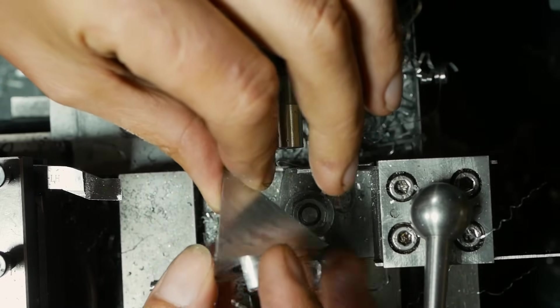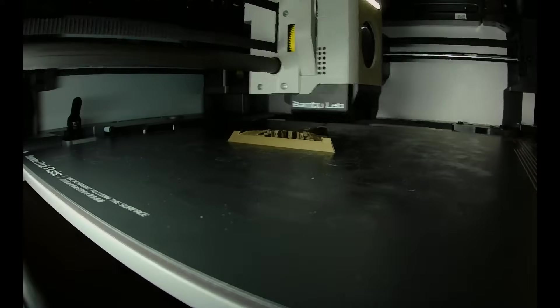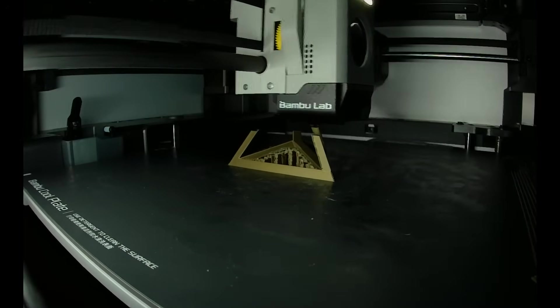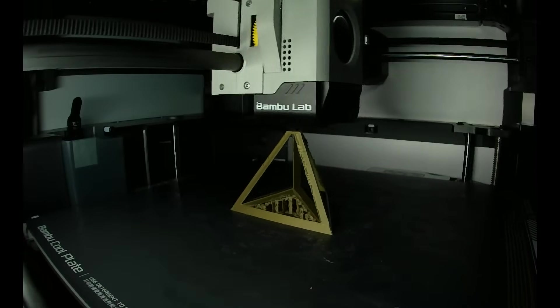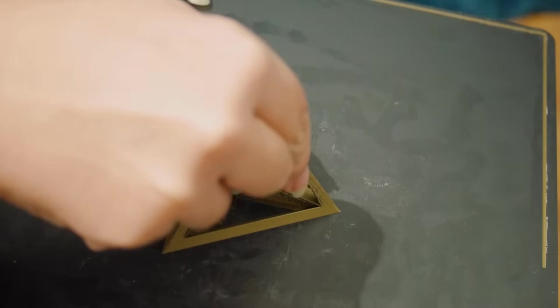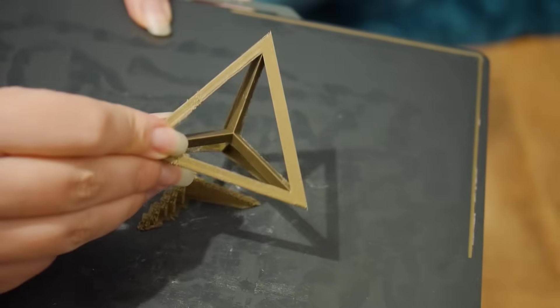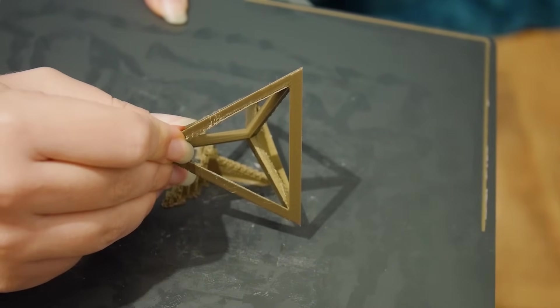I mentioned that simplexes exist in every dimension, but how can we visualize a 4D shape? This printed model is a stereographic projection of a 4D hyper-tetrahedron, or a five-cell. The edges heading towards the center of the model represent edges that are projected outwards into four-dimensional space. Alternatively, we could represent that extra dimension using time, as this animation shows.